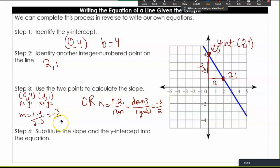Negative 3 over 2, and this is a mistake here. That should be a 2. So then I'm going to write it in y equals mx plus b, and my b is 4.